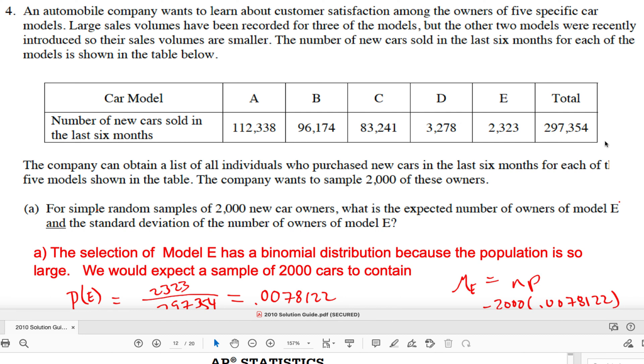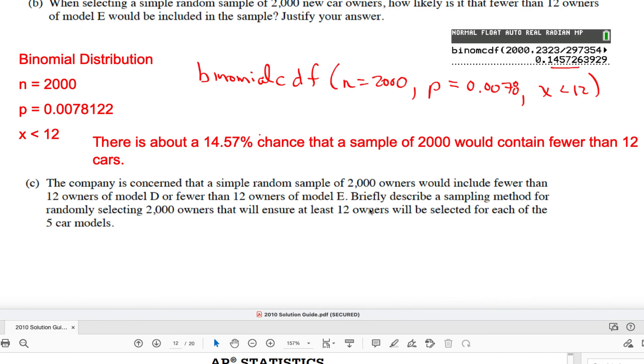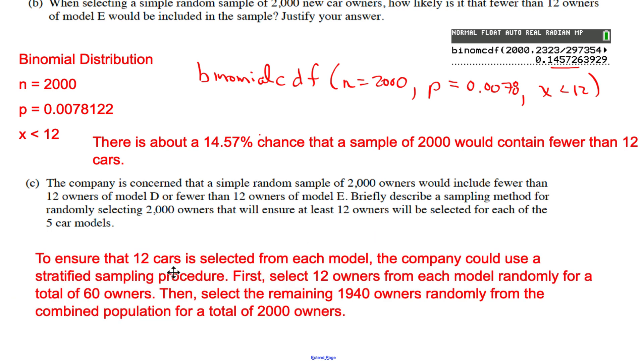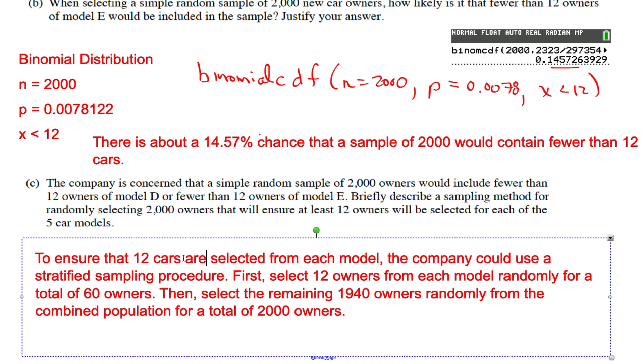In other words, we're going to separate them into groups, and then you pull samples from each group to make a larger sample. When you do that, you can guarantee that you get a certain number from each group. Here's my response, which was super simple when I read it: to ensure that 12 cars are selected from each model, the company could use a stratified sampling procedure. Stratified means you put them in groups called strata that are similar, so all of model A and all of model B, etc.